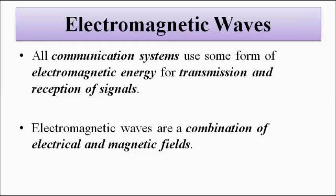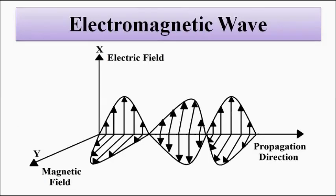Electromagnetic waves are used in all communication systems across different frequency ranges, whether wired or wireless, for transmission and reception. Electromagnetic waves consist of vibrating electric and magnetic fields in mutually perpendicular directions. We can visualize this using three coordinate axes: the x-axis as the electric field, y-axis as the magnetic field, and z-axis as the direction of propagation.